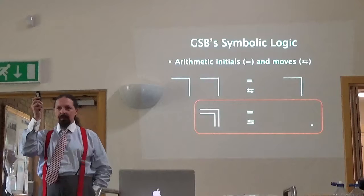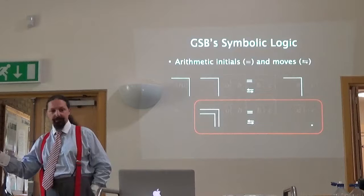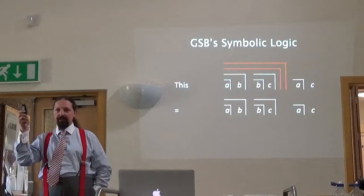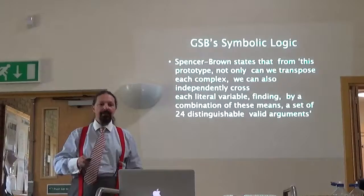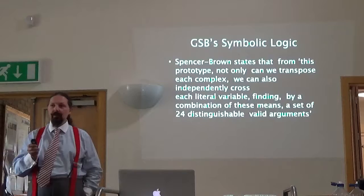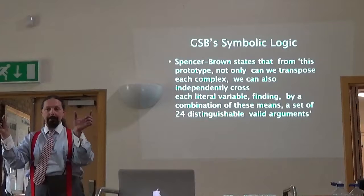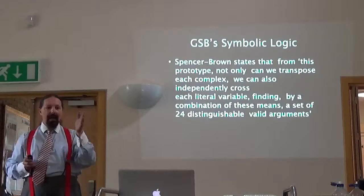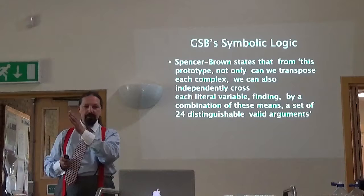Remember the arithmetic initials: if you have mark over mark, you can eliminate those because they're equivalent to the blank piece of paper. That expression contains mark over mark, so you can reduce the Barbara syllogism to two propositions which have marks over them and a conclusion which doesn't. Spencer Brown argues this produces a prototype. From this prototype, not only can we transpose each complex — move each bit of the expression around — we can also independently cross each literal variable: over A, over B, over C, and find by a combination of these means a set of 24 distinguishable valid arguments.